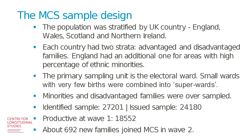The MCS sample design is complex. MCS has a stratified and clustered sample. The population was stratified by all four countries of the UK — England, Wales, Scotland, and Northern Ireland — and each country had two strata: one for advantaged and one for disadvantaged social groups. England had an additional stratum for ethnic minorities. The primary sampling unit at which the clustering was done is the electoral ward, and small wards with very few births were merged into what were called super wards.